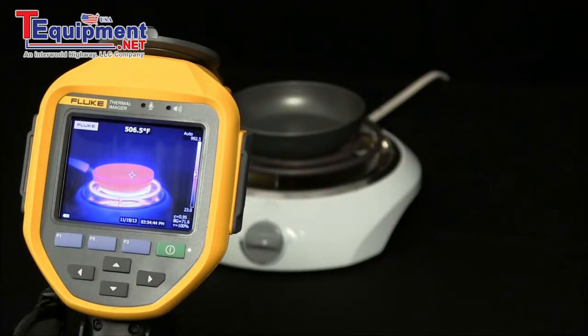Many common objects and materials such as painted metal, wood, water, skin, and cloth are very good at radiating energy and it's easy to get relatively accurate measurements.